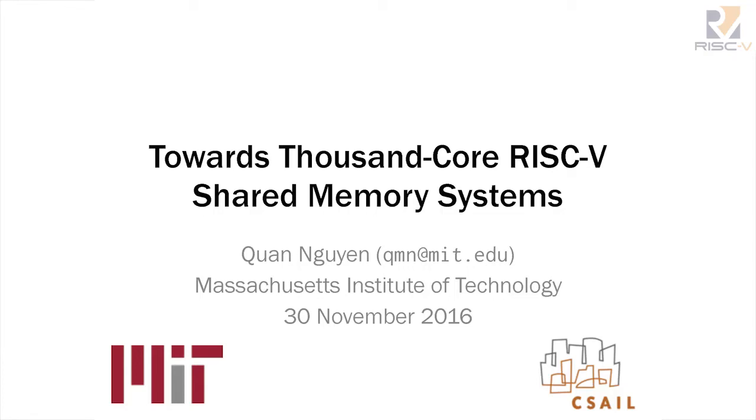Hi everybody, I'm Kwan Nguyen from MIT. We've been working on this prototype thousand-core machine, and I'd like to talk about what we've been up to so far. One of the general considerations as we go into the future of computing is that we want to increase the raw compute available to our applications, and one of the ways we can do this is to increase the number of cores.